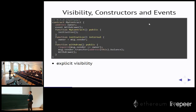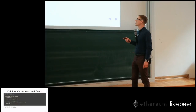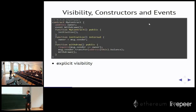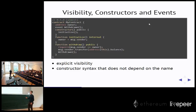Because of that, we now require visibility to be specified explicitly. In current versions the compiler produces a warning; from 0.5.0 on, it will be an error. So now this bug is fixed. Another thing that happened is that the constructor is defined by using a function with the same name as the contract — over the course of development you might change the contract name but forget to change the constructor name. Because of that, we now force the constructor to be specified with a special constructor keyword, not the function keyword.